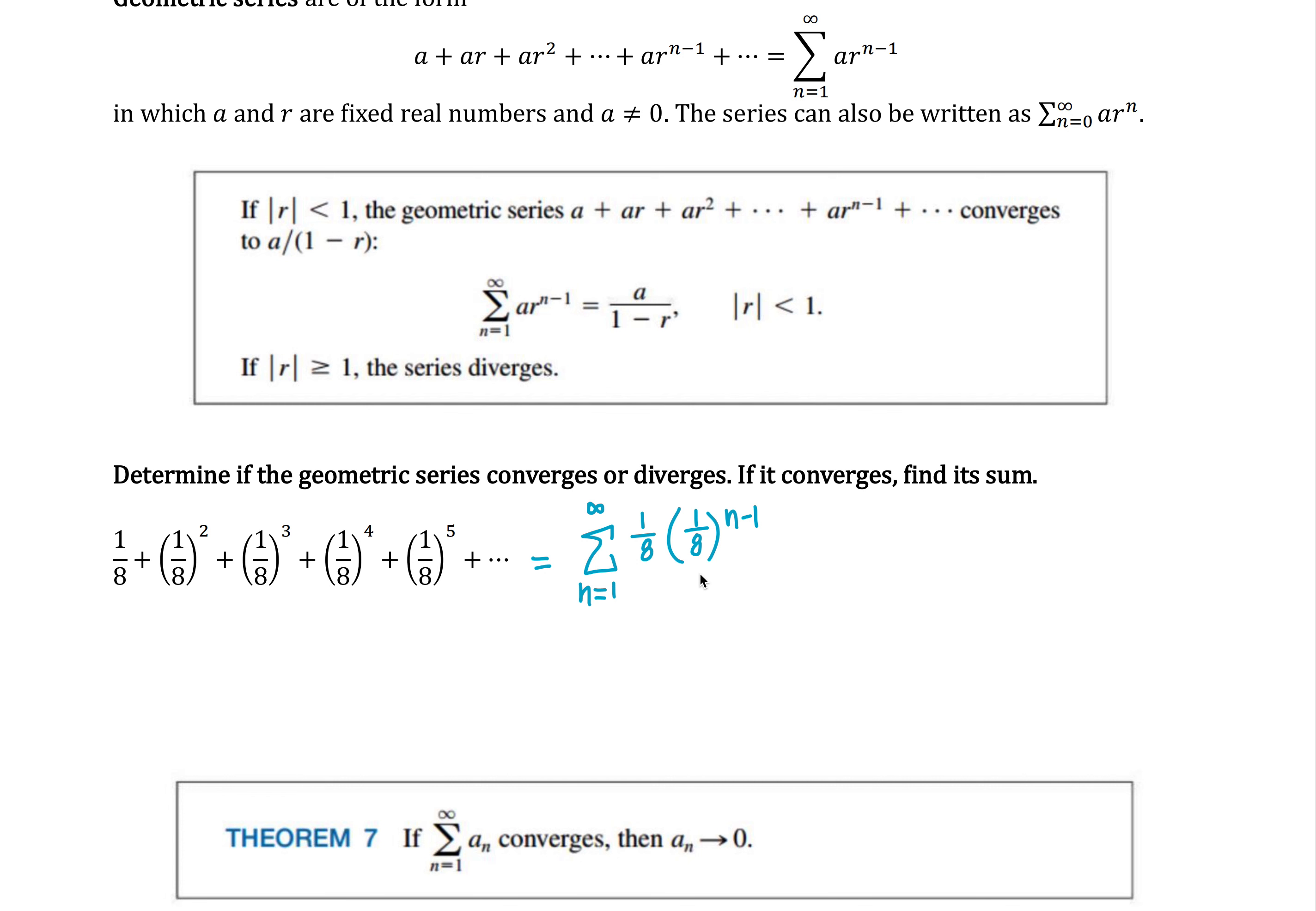The r value is 1/8. That's certainly less than 1. So this is going to converge and it's going to converge to this value here, a over 1 minus r. The a value is 1/8. Let me write that it converges. So it's going to be 1/8 over 1 minus 1/8. So that's 1/8 over 7/8 or 1/7. So it converges to the value 1/7.